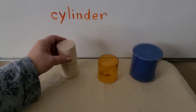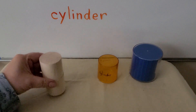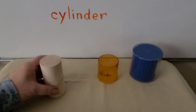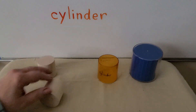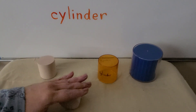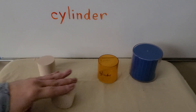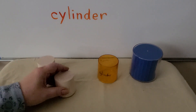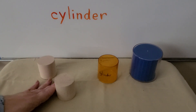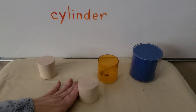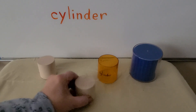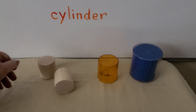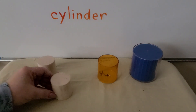We can stack cylinders to make a tower because of their flat surfaces. We can roll cylinders because of the curved surface. And we can slide a cylinder on one of its flat surfaces. So it can stack, it can roll, and it can slide.